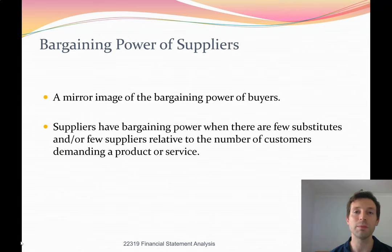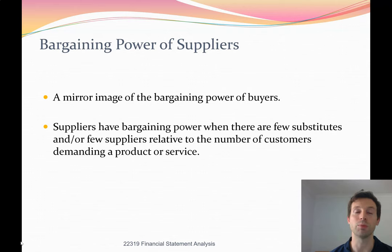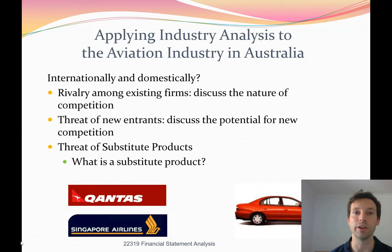The bargaining power of suppliers is the mirror image of the bargaining power of buyers. The number of suppliers and their concentration all influence supplier power. Suppliers have bargaining power when there are few substitutes and few suppliers relative to the number of customers demanding a product or service. All five of these factors influence the profitability of industries.